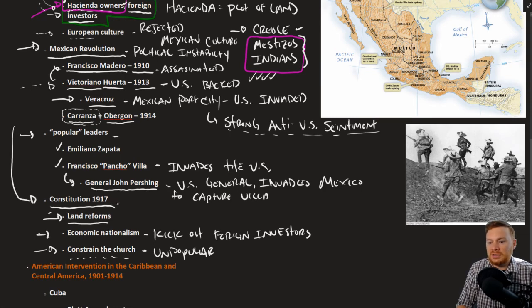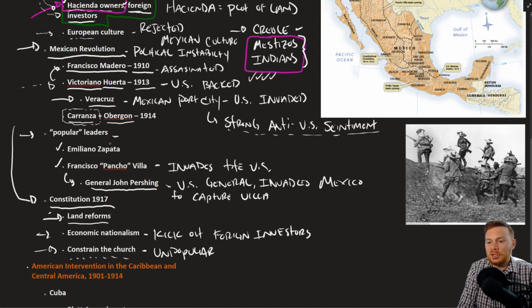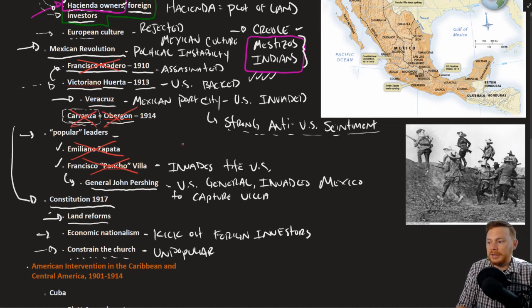Even after 1917, there continued to be a lot of political instability. To illustrate how chaotic this period was: Francisco Madero was assassinated, Emilio Zapata was assassinated, Francisco Pancho Villa was assassinated, Carranza was assassinated, and Obregon was assassinated — a lot of chaos during this particular period.